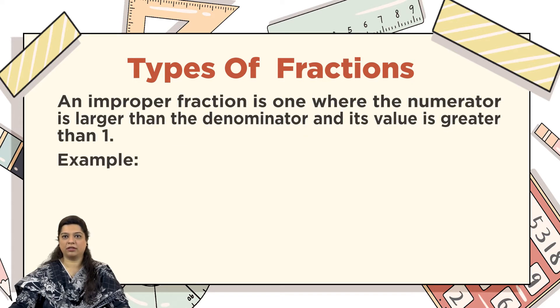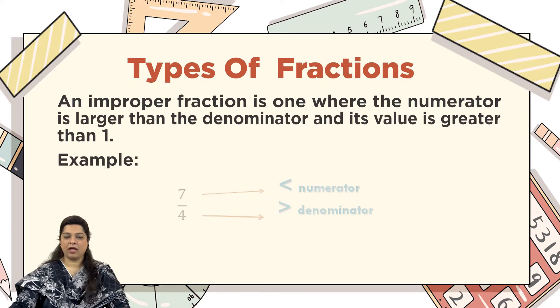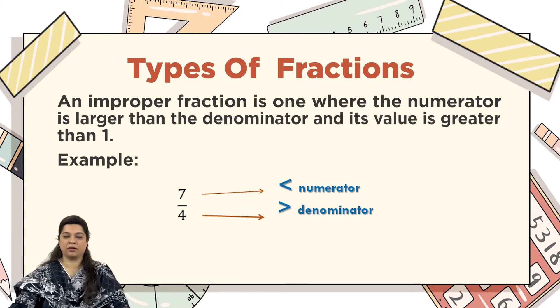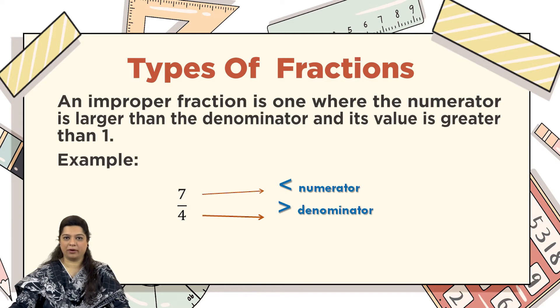The second type of fraction is an improper fraction, where the numerator is larger than the denominator and its value is greater than 1. As you can see in the example, the numerator is 7 and the denominator is 4. If we divide them, the answer will be greater than 1.